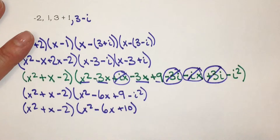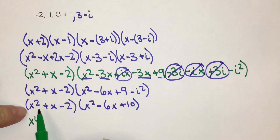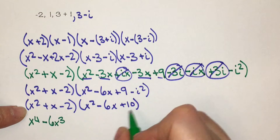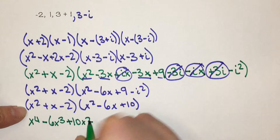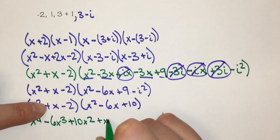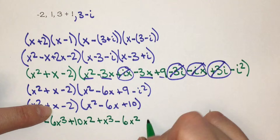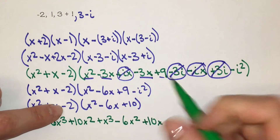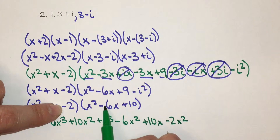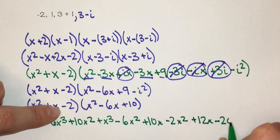Now multiplying x squared plus x minus 2 by x squared minus 6x plus 10: x squared times x squared is x to the 4th, x squared times negative 6x is negative 6x cubed, x squared times 10 is 10x squared. Then x times x squared is x cubed, x times negative 6 is negative 6x squared, x times 10 is 10x. Finally, negative 2 times x squared is negative 2x squared, negative 2 times negative 6 is plus 12x, and negative 2 times 10 is minus 20.